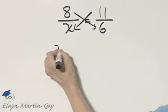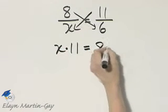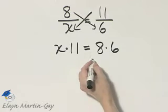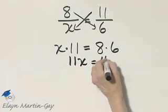So here I have x times 11 equal to 8 times 6. In other words, to solve the proportion, I'm equating cross products. So I'll have 11x is equal to 8 times 6, which is 48.